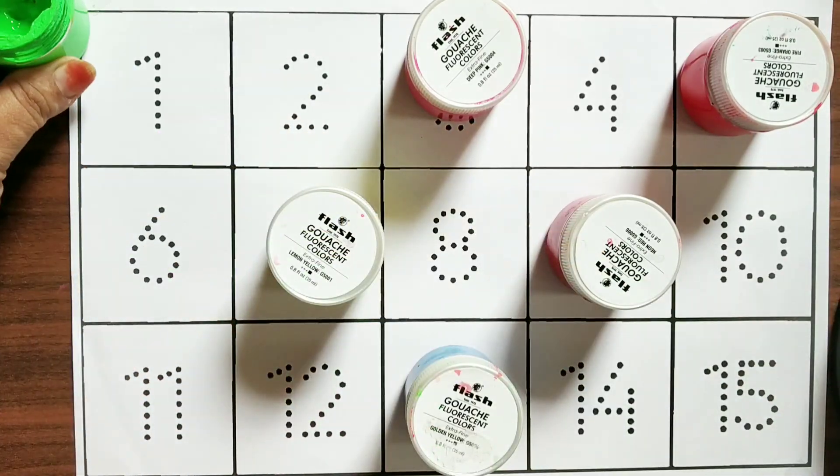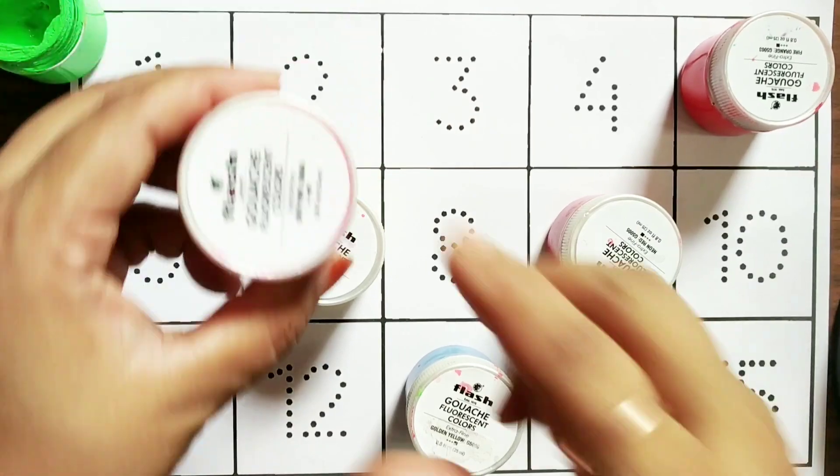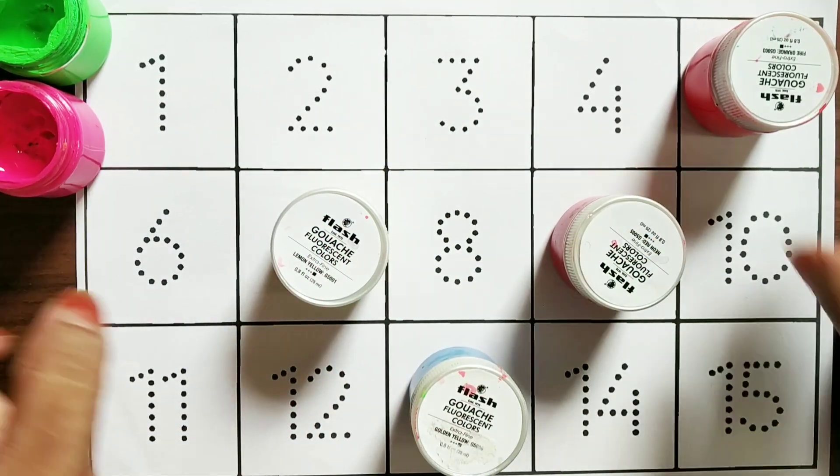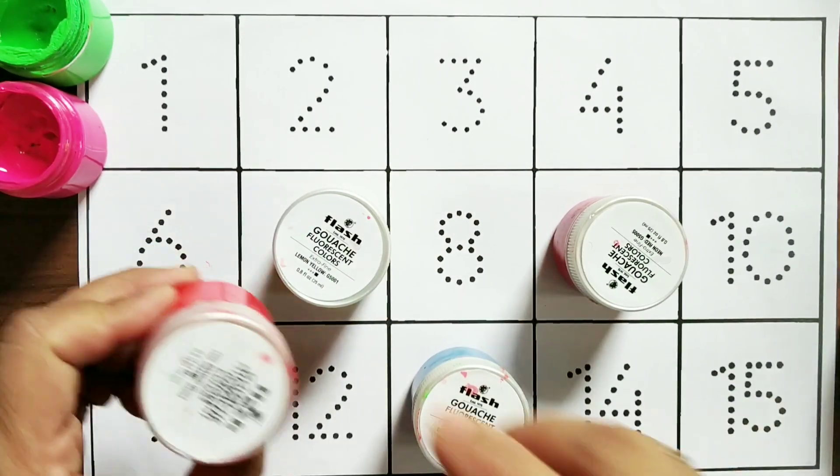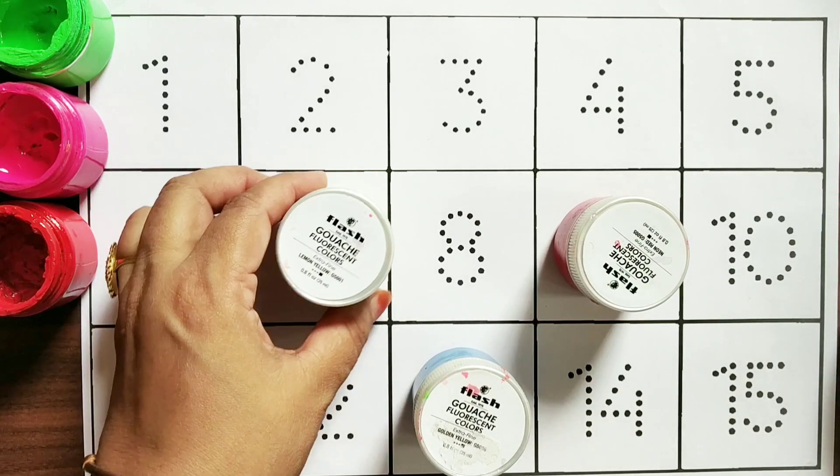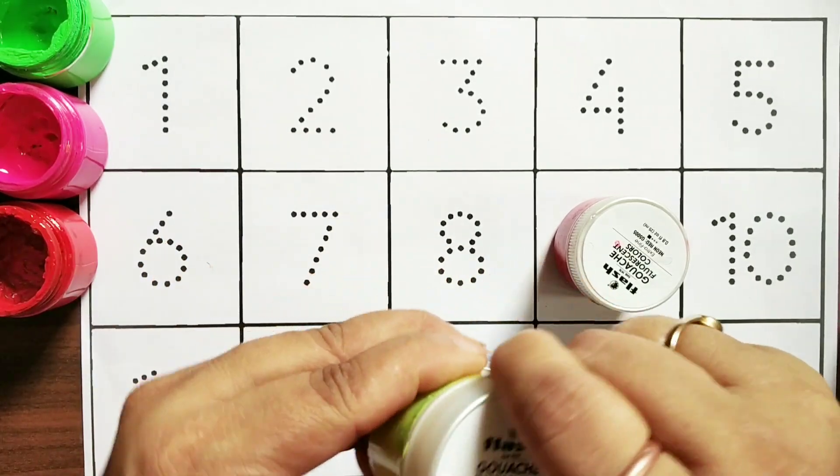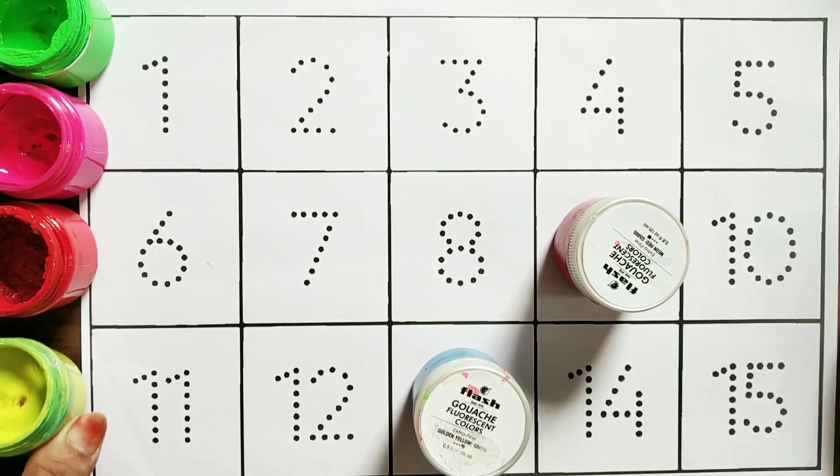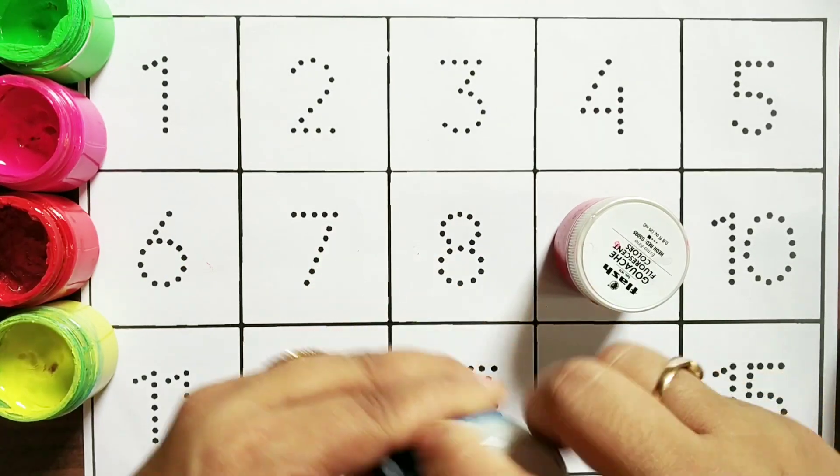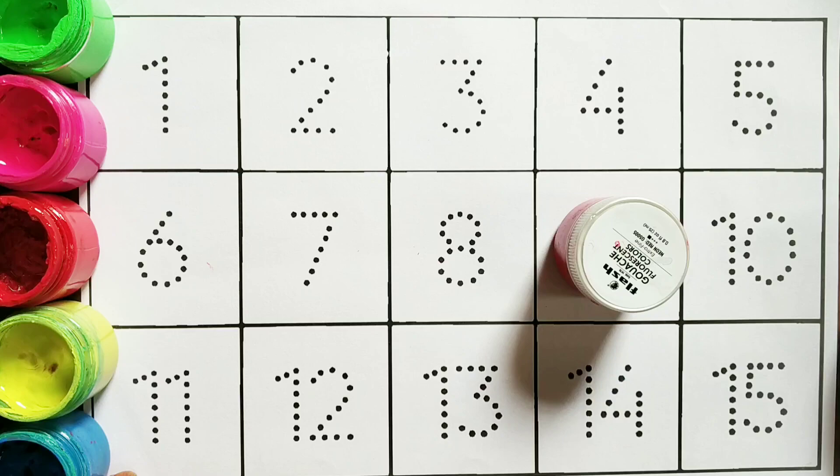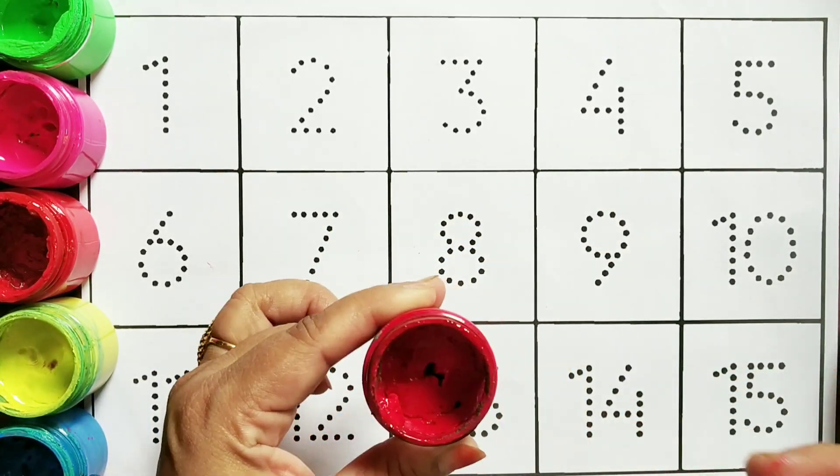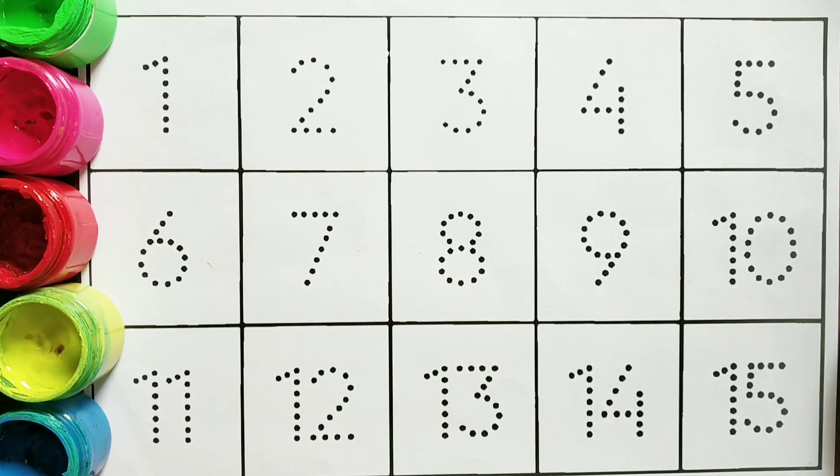The colors are yellow color, pink color, orange color, yellow color, sky blue color, red color, red color. So, now we will start writing.